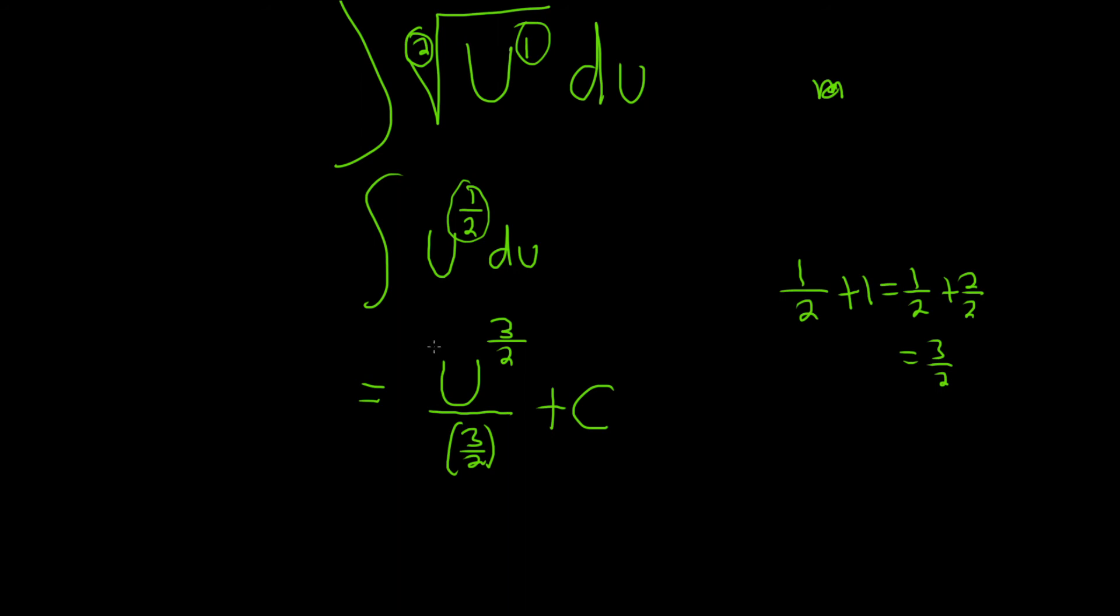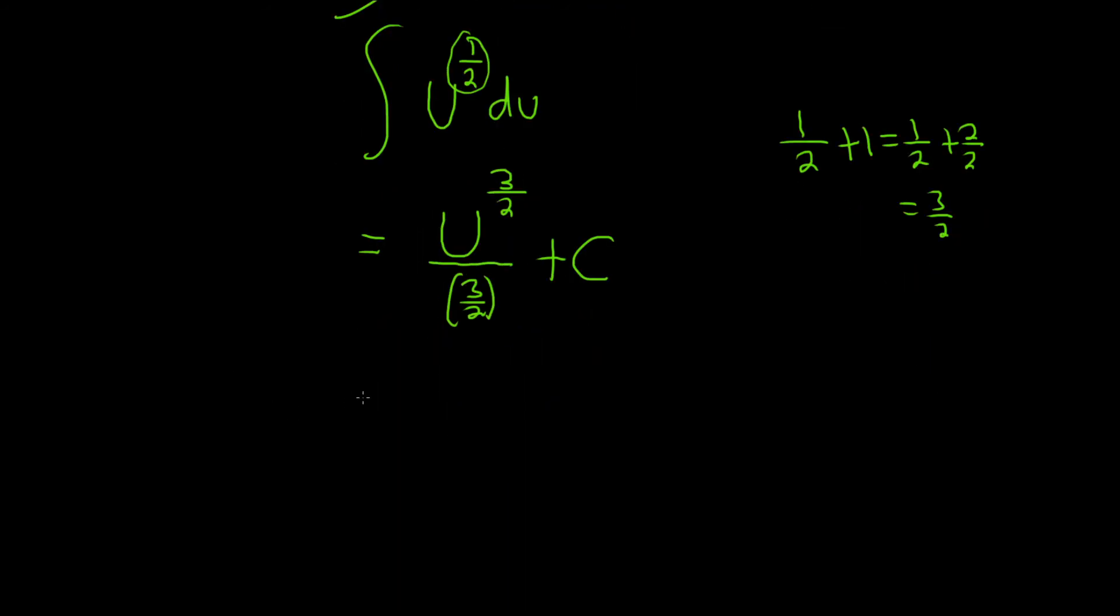We're almost done. Most people don't like it if you leave it like this. When you're dividing by 3 halves, that's really the same thing as multiplying by the reciprocal of 3 halves, which is 2 thirds. So this is really 2 thirds u to the 3 halves. Let's not forget our capital C. That would be the final answer to this problem. I hope this video has been helpful.